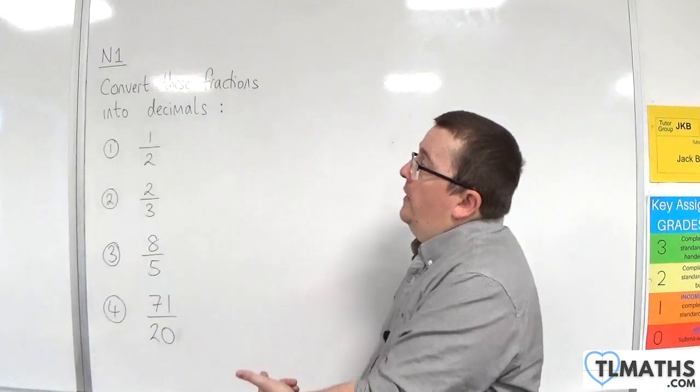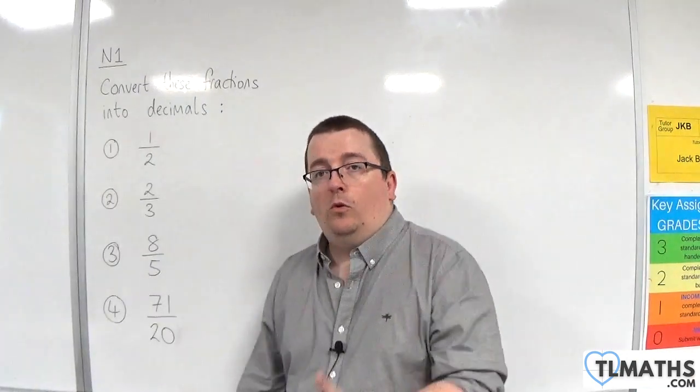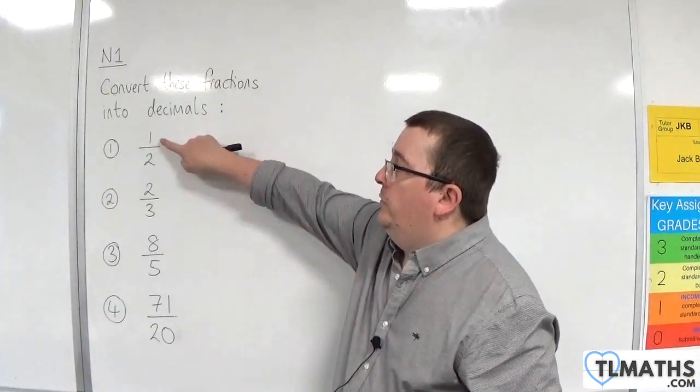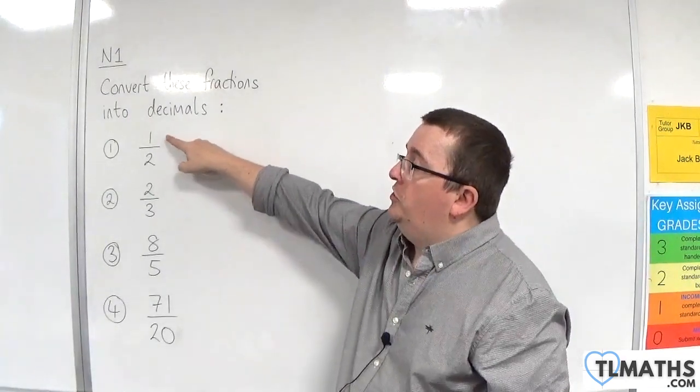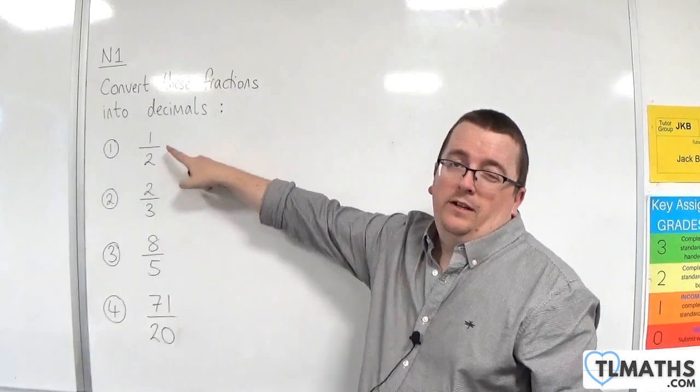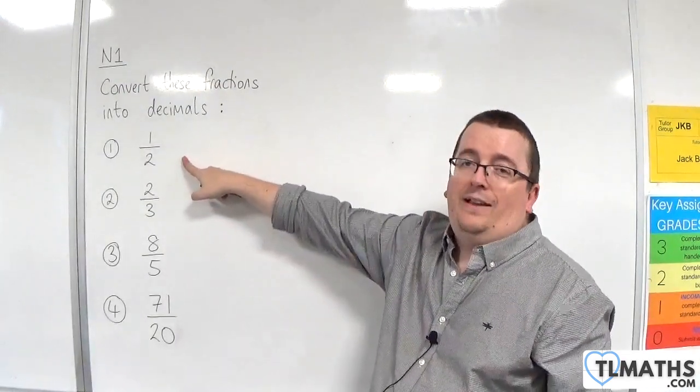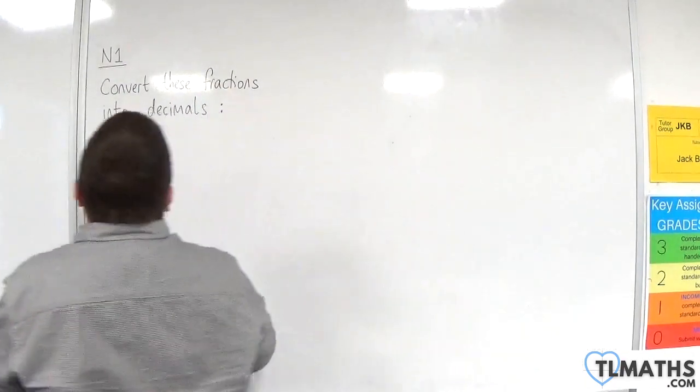So in order to convert a fraction into a decimal, what we do is we do the numerator and divide it by the denominator. So in the first case, we're just doing 1 divided by 2. And of course, you should know what half is as a decimal anyway, and that's 0.5.